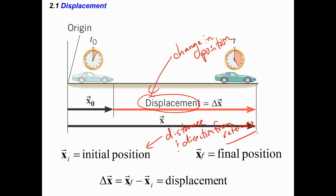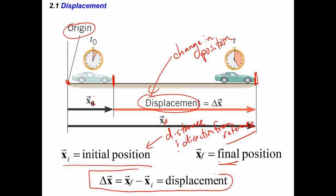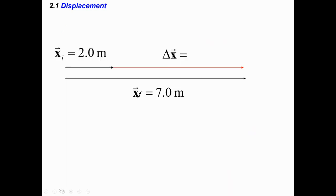For example, this car starts out at some initial position x-initial — this is kind of the origin, and we're measuring the front of the car right there. Then later the car ends up at a final position x-final. When we measure displacement, we're looking at the change in that position. If I started two meters away from the origin and moved to seven meters away, the displacement would be seven minus two, or five meters to the right.